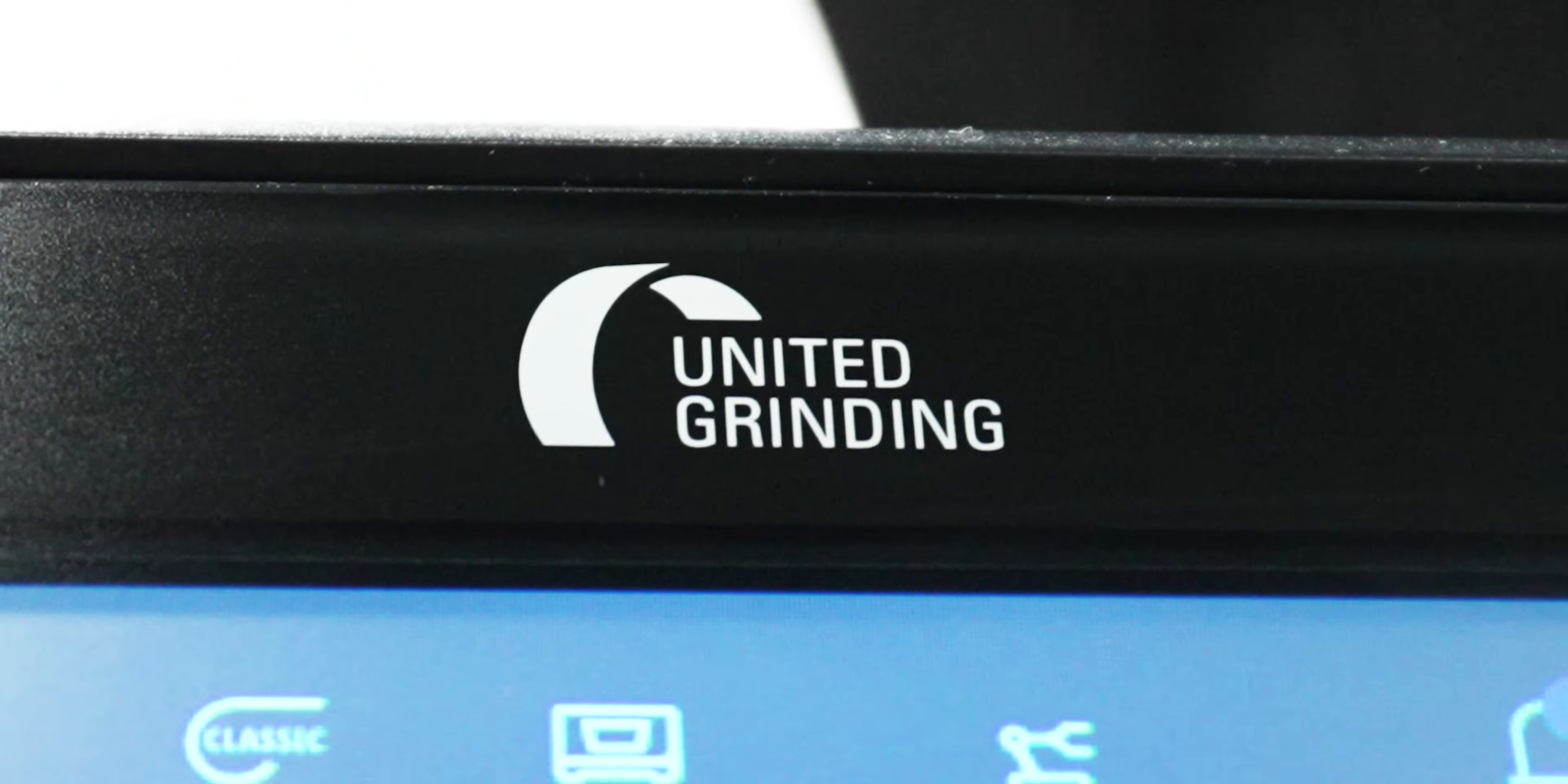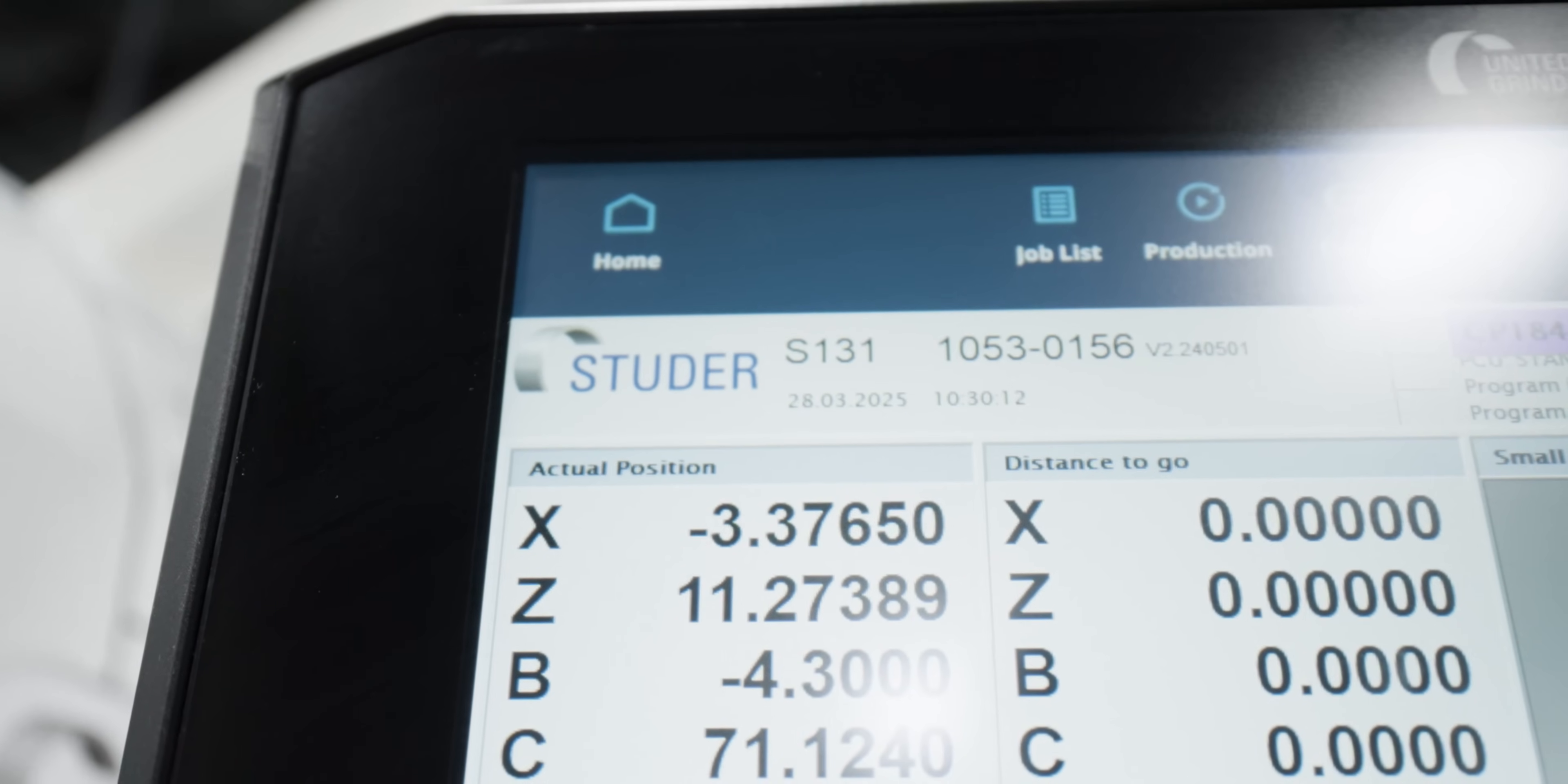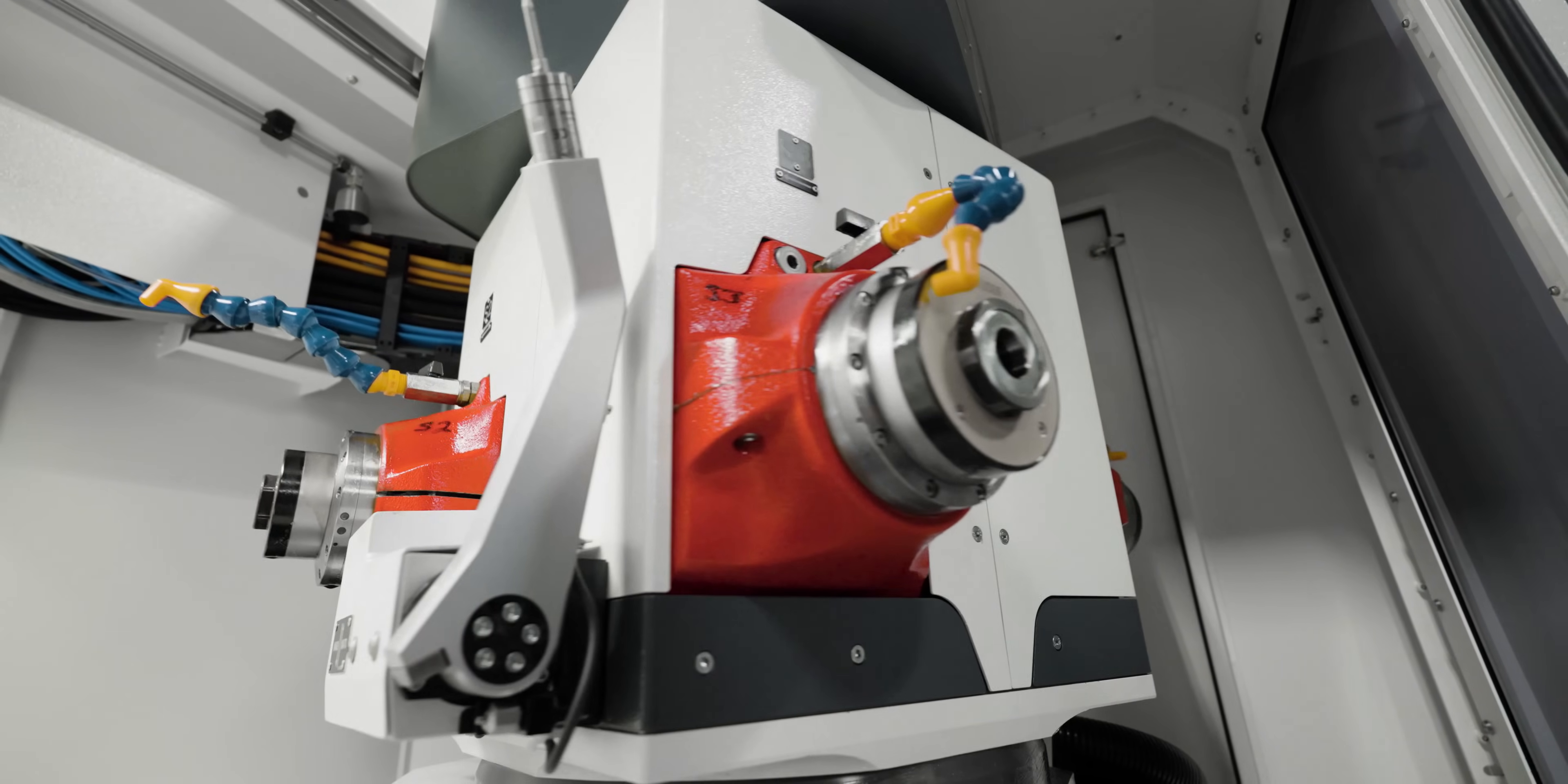So the S131R just dropped on our floor. We've got the brand new core panel with Studer Sim integrated into it. And inside the machine on the right side, we've got three ID spindles hooked up, and then we have an OD spindle as well.